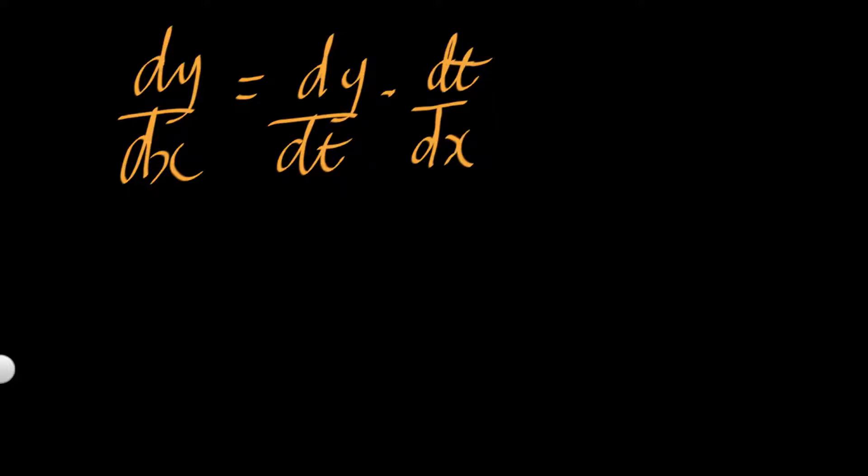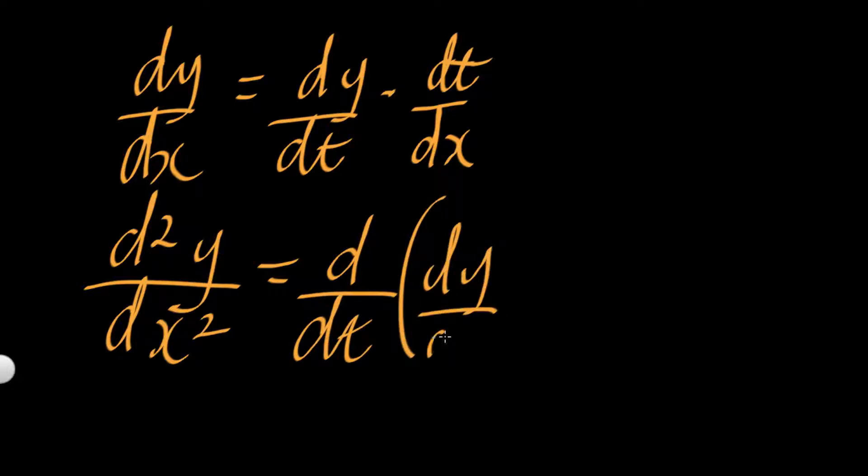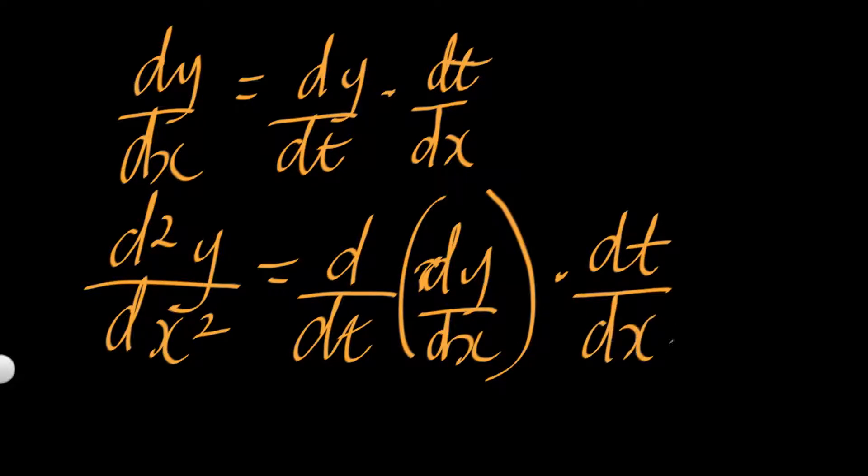Solving or getting this first derivative involves first finding dy/dt and also finding dt/dx, then you multiply them. Then you have dy/dx. It's like an application of the chain rule. Then for the second derivative d²y/dx², this is the formula: d/dt of dy/dx multiplied by dt/dx.